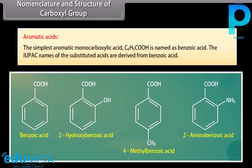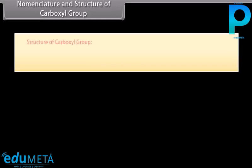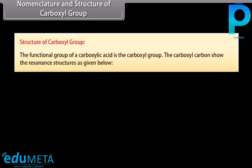The simplest aromatic monocarboxylic acid, C6H5COOH, is named as benzoic acid. The IUPAC names of substituted acids are derived from benzoic acid. Structure of carboxyl group: the functional group of a carboxylic acid is the carboxyl group. The carboxyl carbon shows resonance structures.